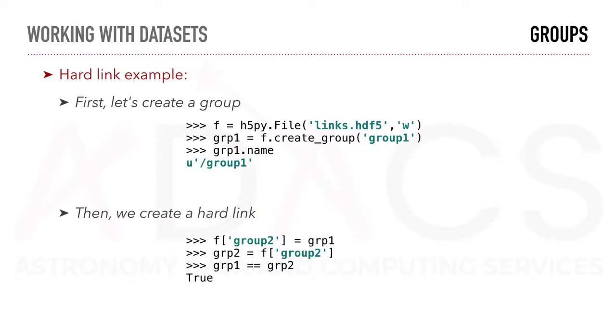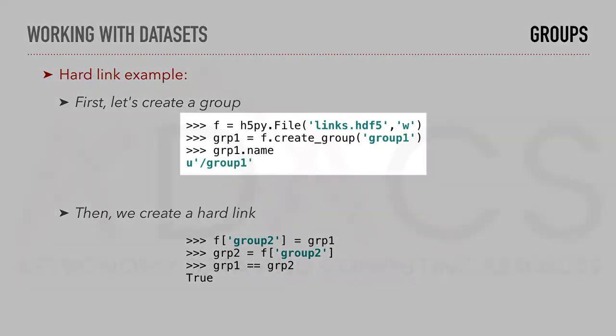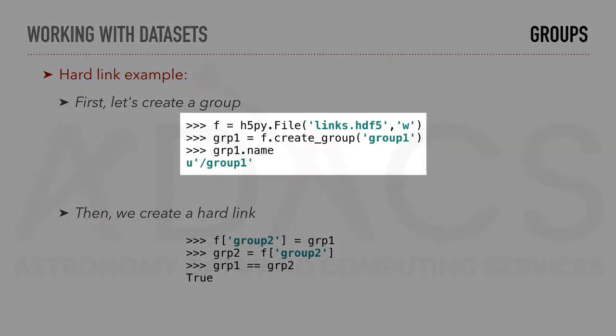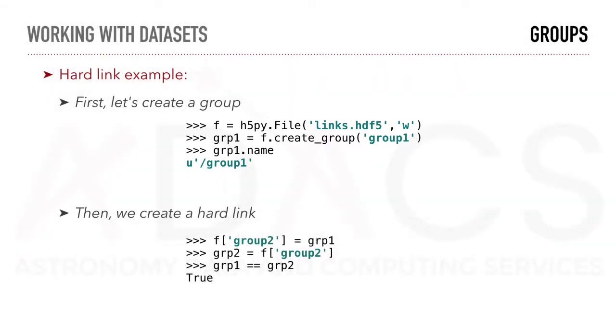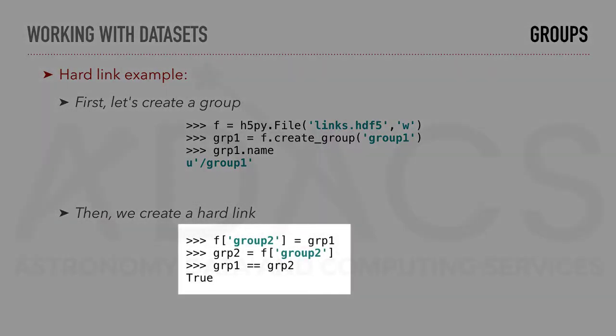Here is an example of a hard link. First, we create a group — group one. Then we create a hard link by assigning group one to group two. If we compare the two, we can see that they are exactly the same, and therefore hard-linked.